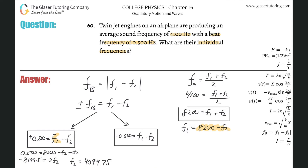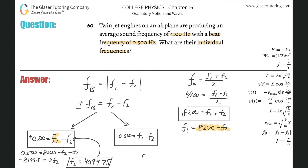As for significant figures, the problem only gave us 4100, but I'll leave the full detail. Now for F1: taking F2 = 4099.75 and substituting back, F1 = 4099.75 + 0.5 = 4100.25 hertz. Notice they are equally spaced away from 4100 — those are the two individual frequencies.